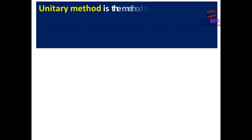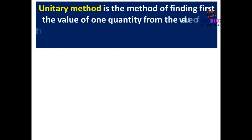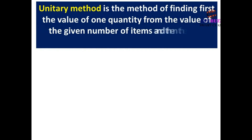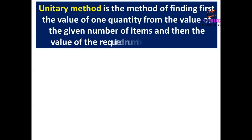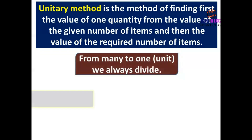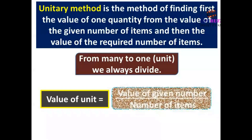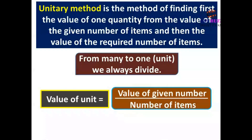The unitary method is the method of finding first the value of one quantity from the value of a given number of items, and then the value of the required number of items. From many to one unit, we always divide. Value of one unit = value of given number ÷ number of items.